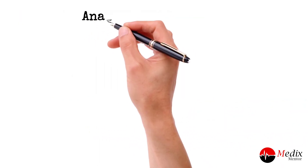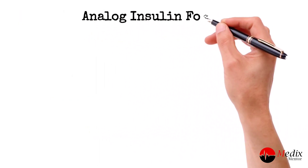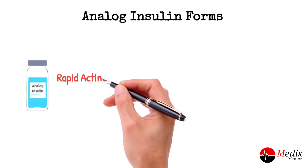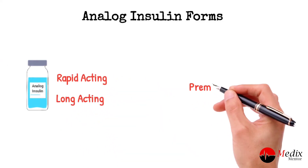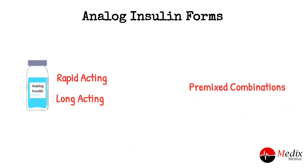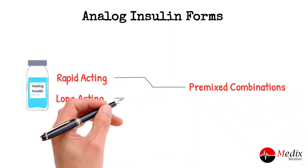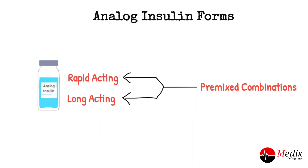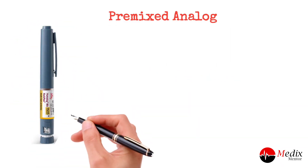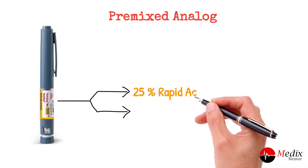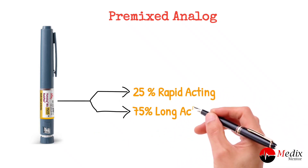Analog insulins are available in two main forms: rapid acting and long acting, as well as pre-mixed combinations. Pre-mixed analog insulins combine a ratio of rapid acting and long acting insulin. For example, Humalog Mix 25 consists of 25% rapid acting and 75% long acting insulin.